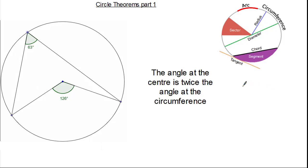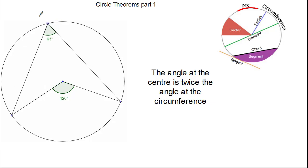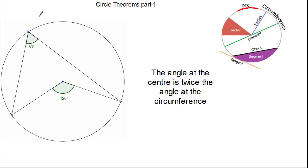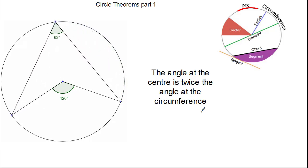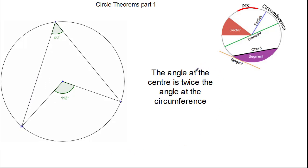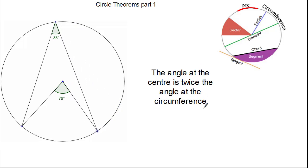Let's look at our first circle theorem. This circle theorem states that the angle at the centre is twice the angle at the circumference. In this example you can see we've formed an angle at the centre using two radii, making 126 degrees. We've then formed another angle at the circumference making 63 degrees. No matter where we move that angle at the circumference it still remains 63 degrees. As we change the angle at the centre, it still remains twice the angle at the circumference.